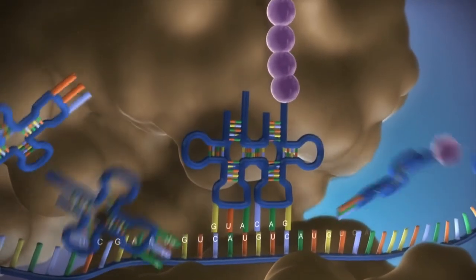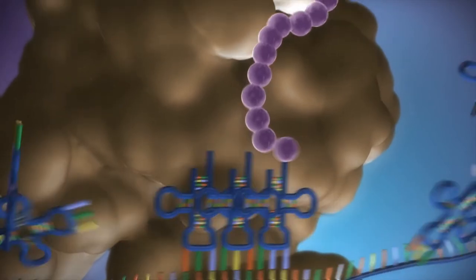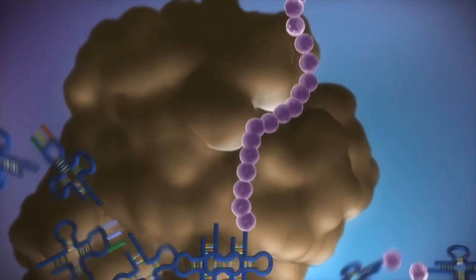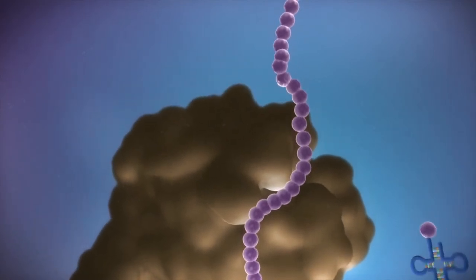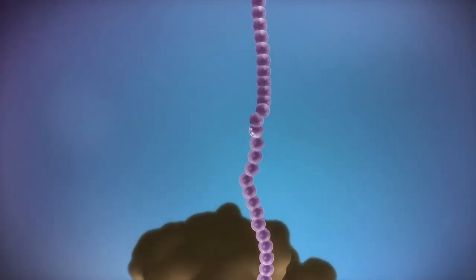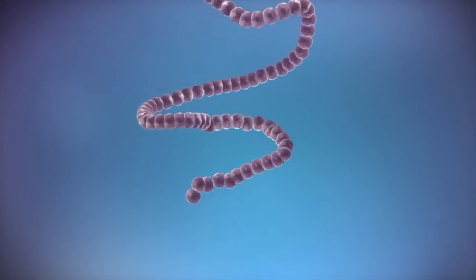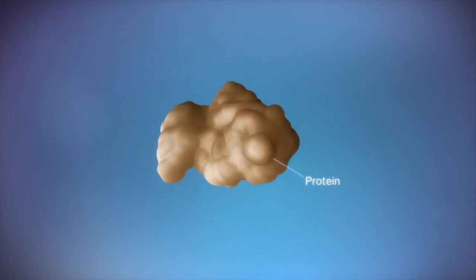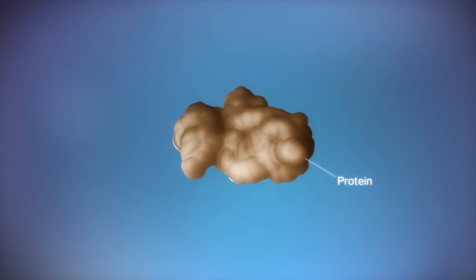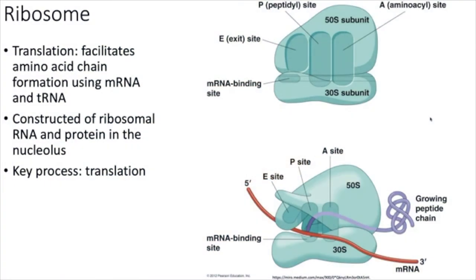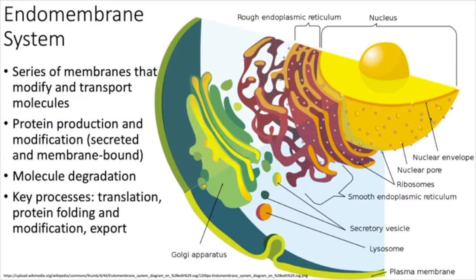If you're a cell that needs to secrete something like a hormone — which is probably a protein — you're going to make it and send it through your endomembrane system to be exported. The endomembrane system generally includes the endoplasmic reticulum, the Golgi body, and vesicles. The rough ER is continuous with the nuclear membrane and has ribosomes bound to it. It acts as the entry point for protein production.